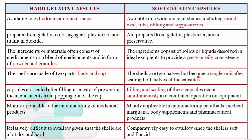The hard gelatin capsule shell is made up of two parts: body and cap. For soft gelatin capsules, the two halves become a single unit after sealing. Hard capsules are sealed after filling to prevent the medicament from coming out. For soft gelatin capsules, filling and sealing occur simultaneously in a combined operation on equipment. Hard gelatin capsules are mainly applicable in manufacturing of medicinal products.